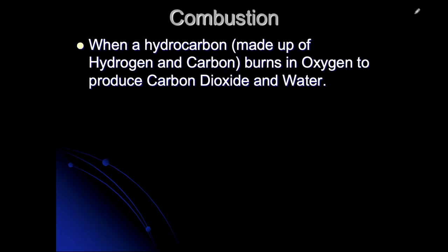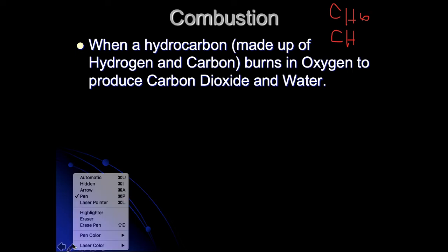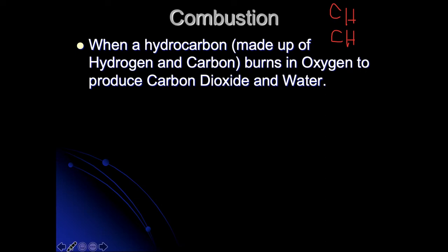The next type is combustion. This is when you have a hydrocarbon — a compound made up of carbon and hydrogen. You'll see things that begin with CH, and sometimes you'll see O as well, with any ratio of different subscripts. We did a problem in practice that was C6H6. Combustion reactions always produce carbon dioxide and water. No matter what your reactants are, if it's combustion, the products are CO2 and H2O.